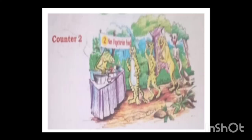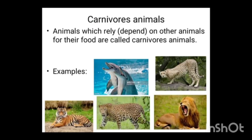In counter 2 we can see tiger, lion, leopard, fox, etc. Animals which depend on other animals for their food are called carnivores. For example, dolphin, leopard, cheetah, lion, tiger.